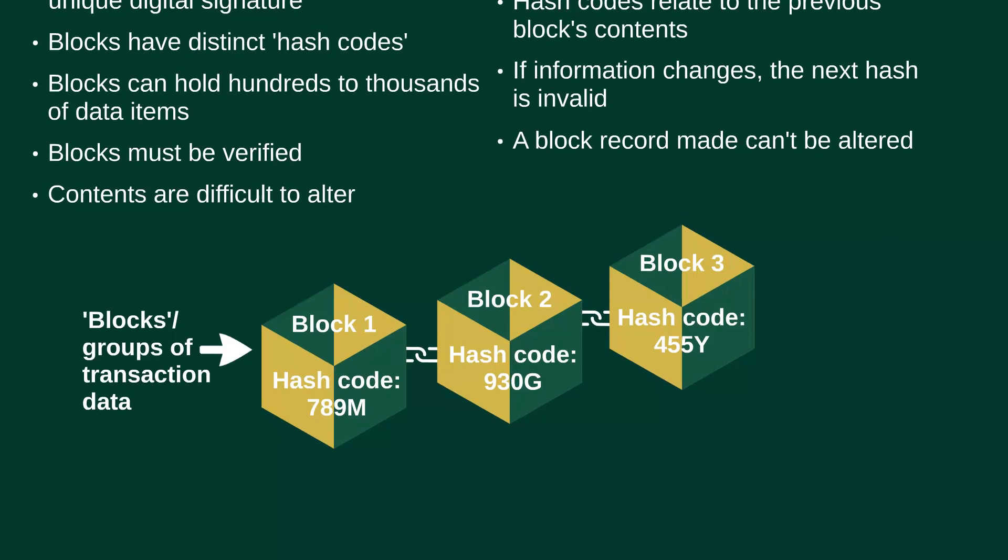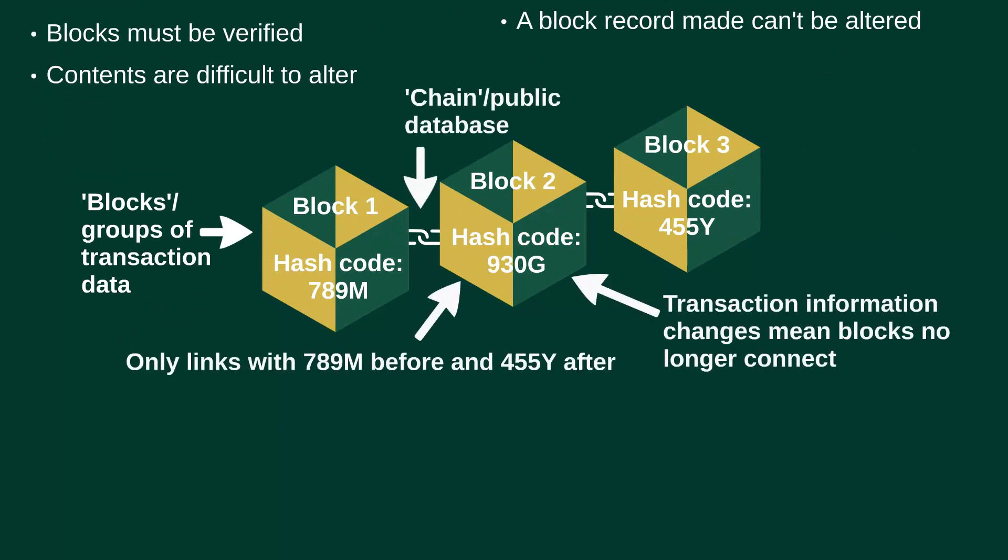Going back to our diagram, we can see the chain, which is the public database — essentially a container to store data. In blockchain, the chain is that database and is the container for the blocks, which hold the data, and it can be accessed by the public. Looking at the middle block, its hash code only relates to the previous block. If the transaction information changes, the blocks are no longer able to connect to the chain.